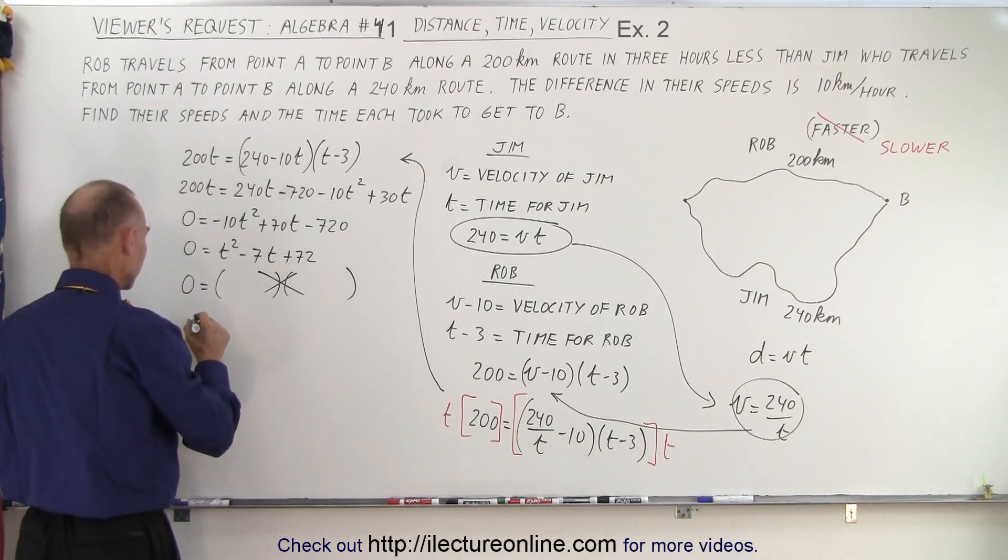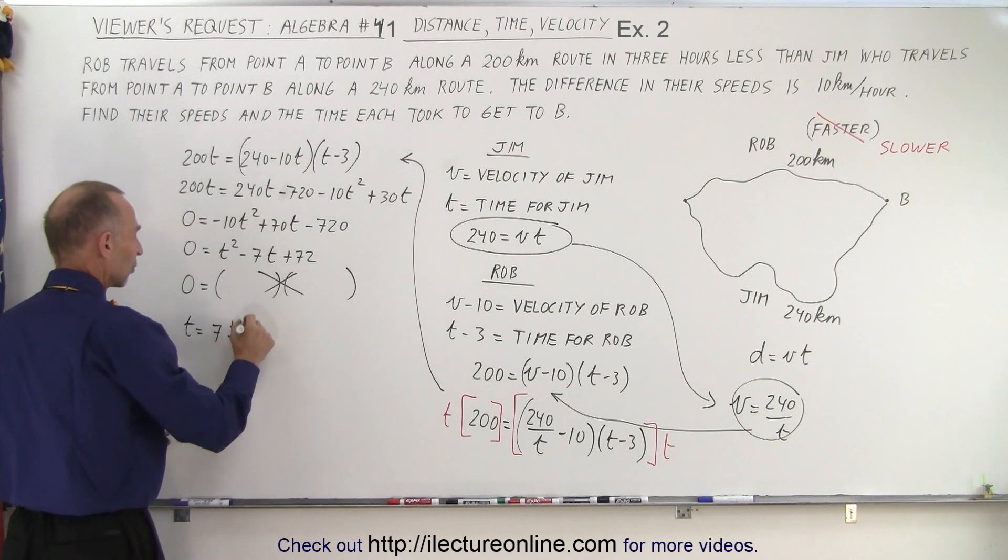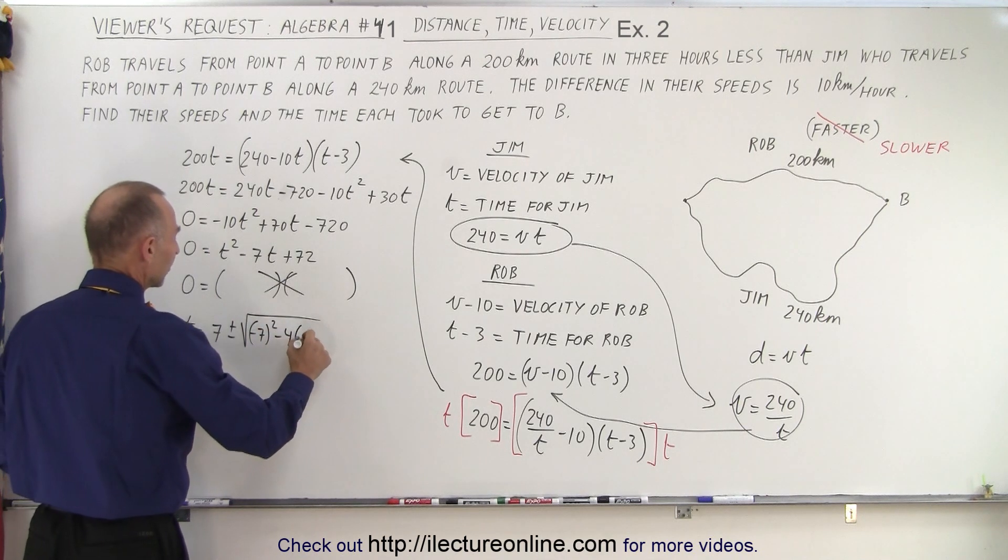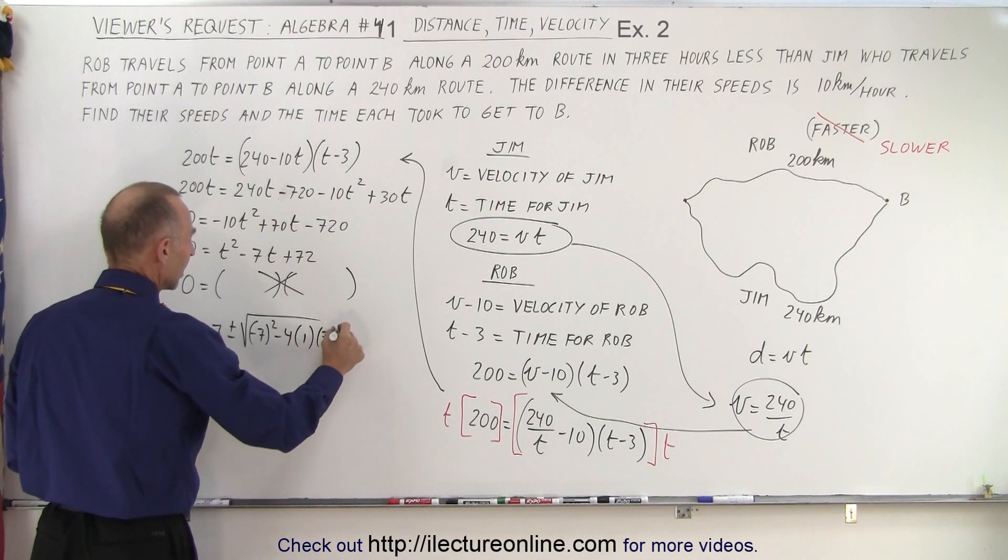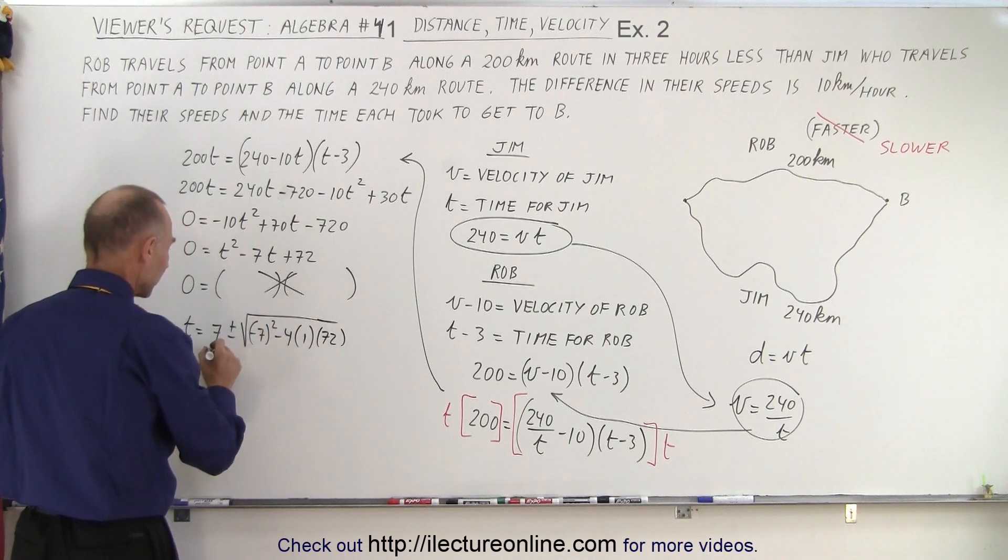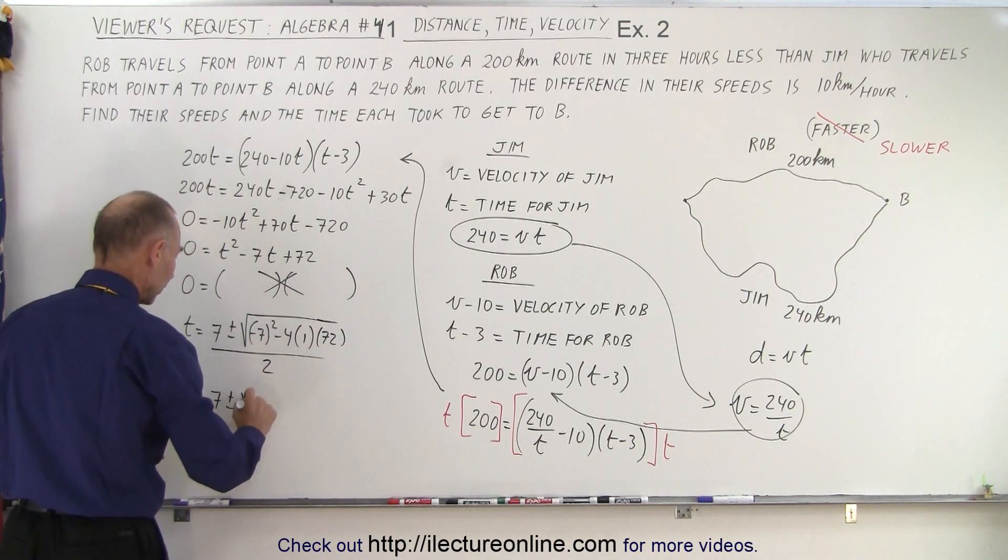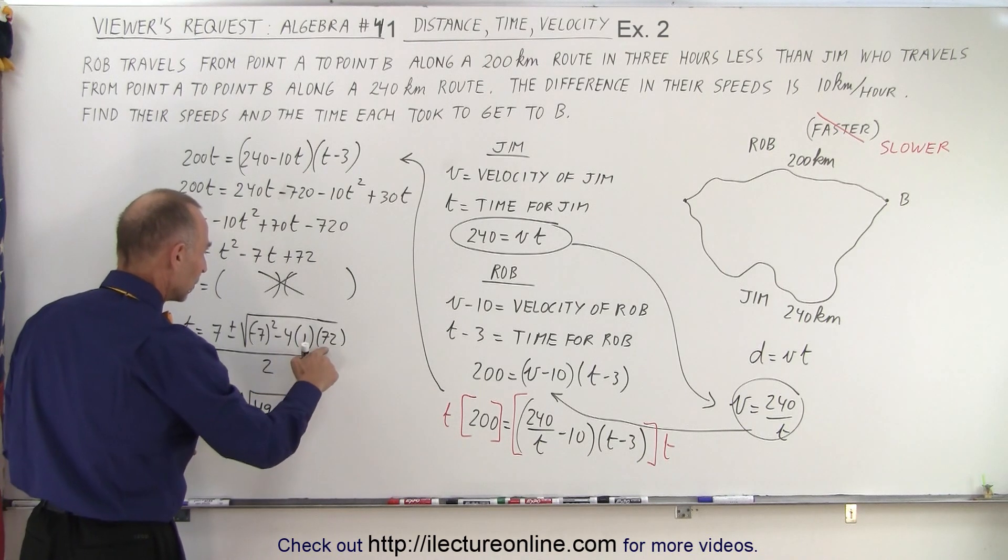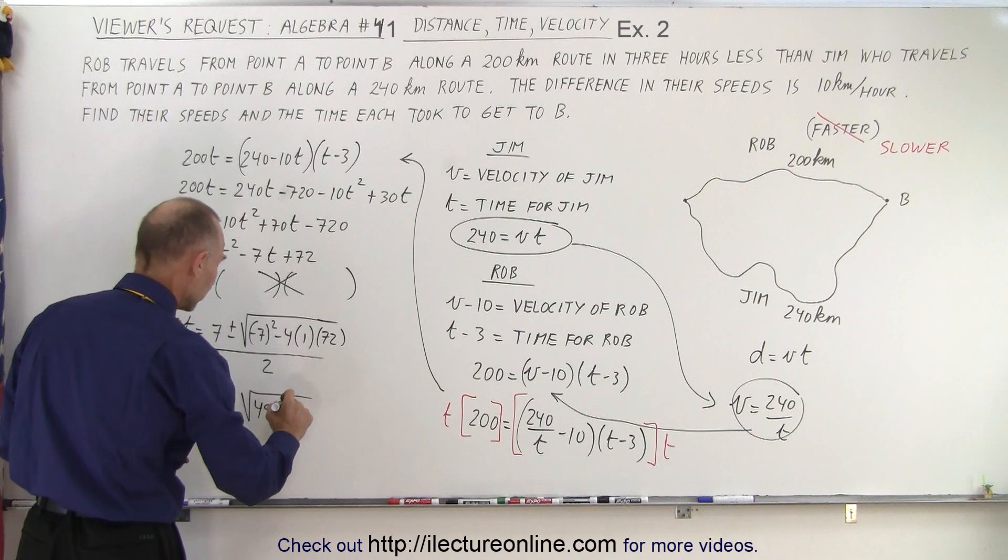Let's try the quadratic formula. So we have T is equal to 7 plus or minus the square root of negative 7 squared minus 4 times A times C, all divided by 2A. So I get 7 plus or minus the square root of 49 minus, that would be 280, 288.